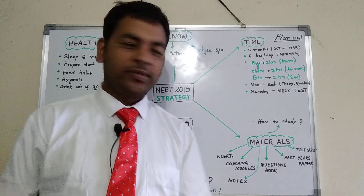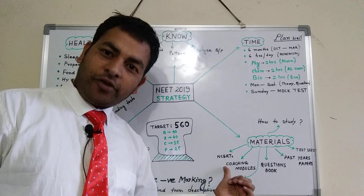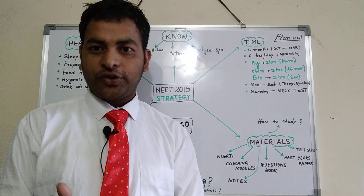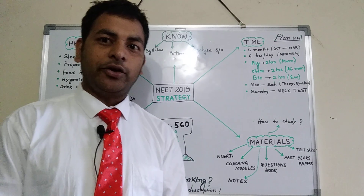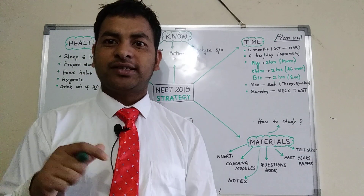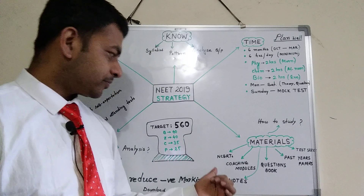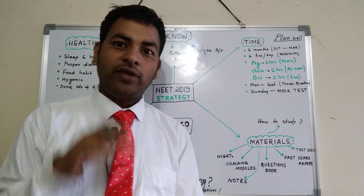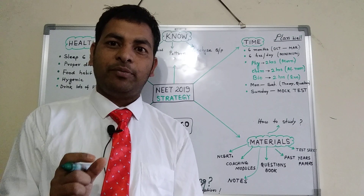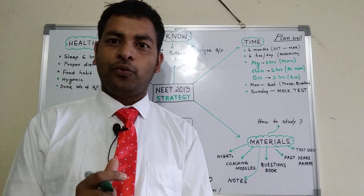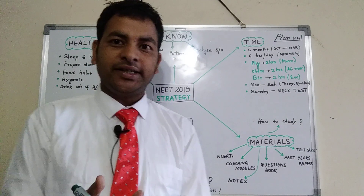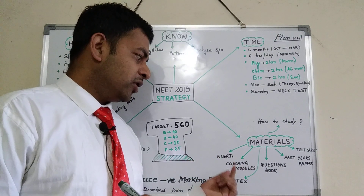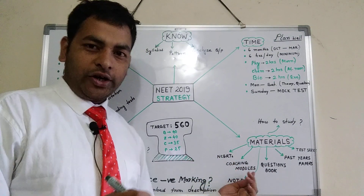Now coming to materials — many students are confused about what to study. NCERT books are the solution. NCERT books are good for chemistry and biology; for physics you may need to refer to some other study materials. Try to read each and every line of NCERT and elaborate on it, because NCERT books are written in a concise way and you may not understand everything. In that case, take the help of a good reference book or coaching modules.